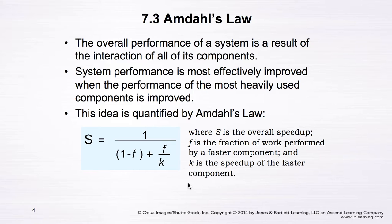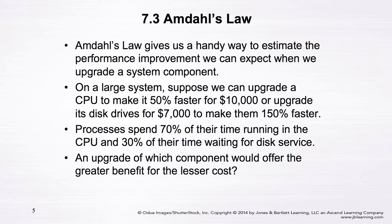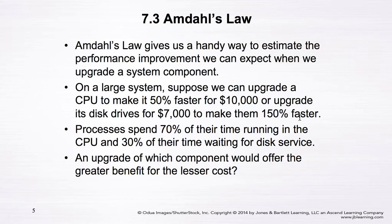This equation is used to measure or quantify the overall performance of a system when we try to replace or upgrade a component. Let's consider an example using Amdahl's Law. Suppose we have two options to upgrade a system. The first option is to upgrade the CPU to make it 50% faster at a cost of $10,000. The second option is to upgrade a disk drive for $7,000, which increases disk performance by 150% compared to the old disk drive.